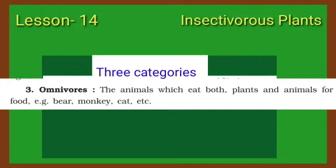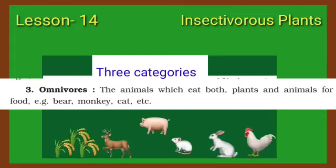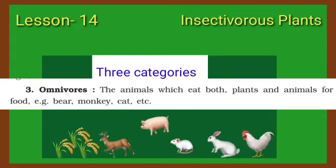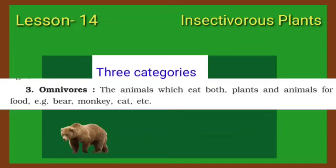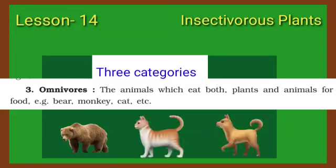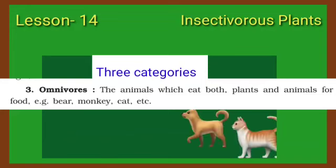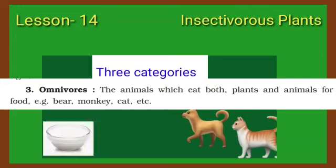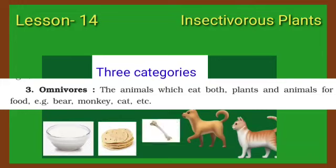3. Omnivores — the animals which eat both plants and animals for food. For example, bear, cat, dog, etc. Dogs and cats eat milk and bread, but dogs also eat bones and cats eat rats.